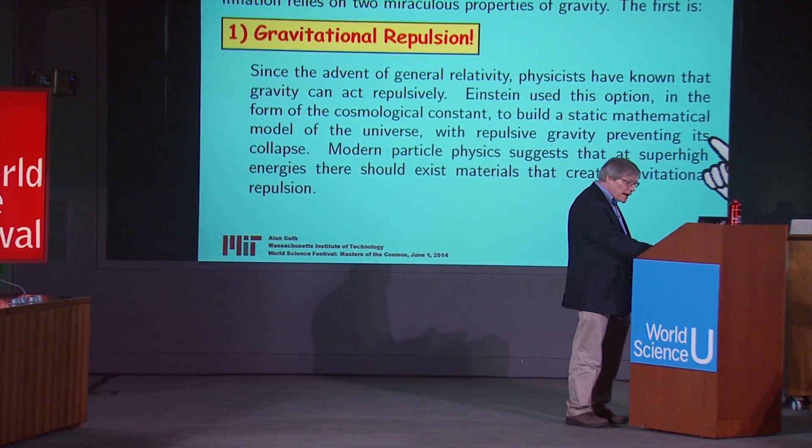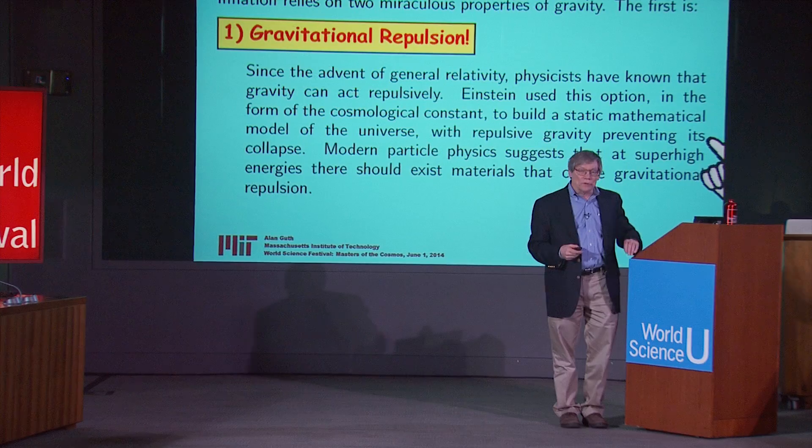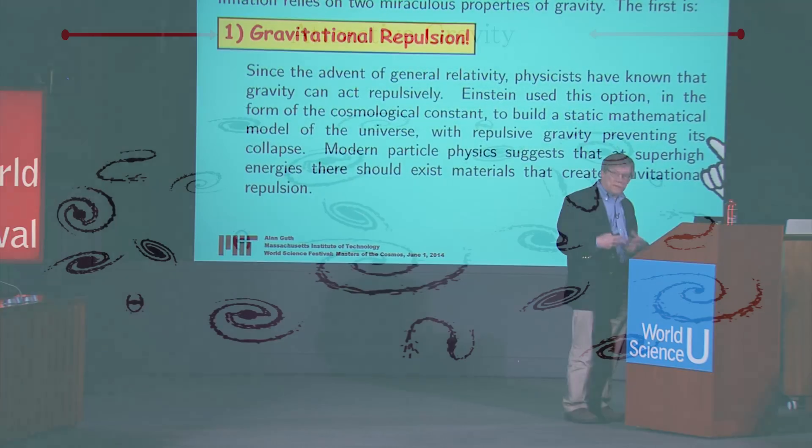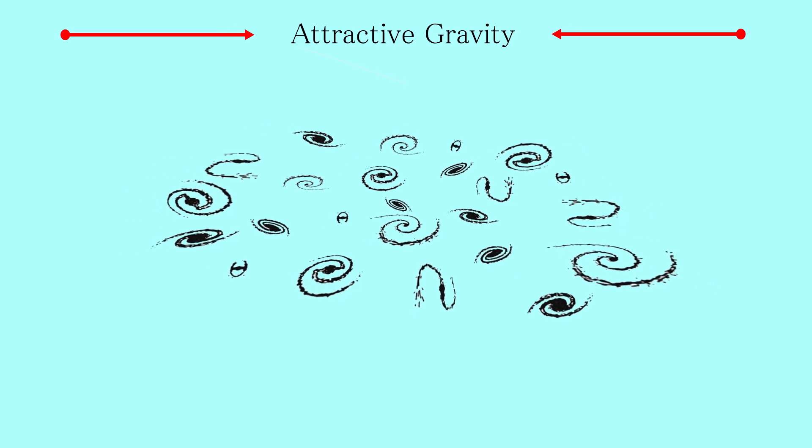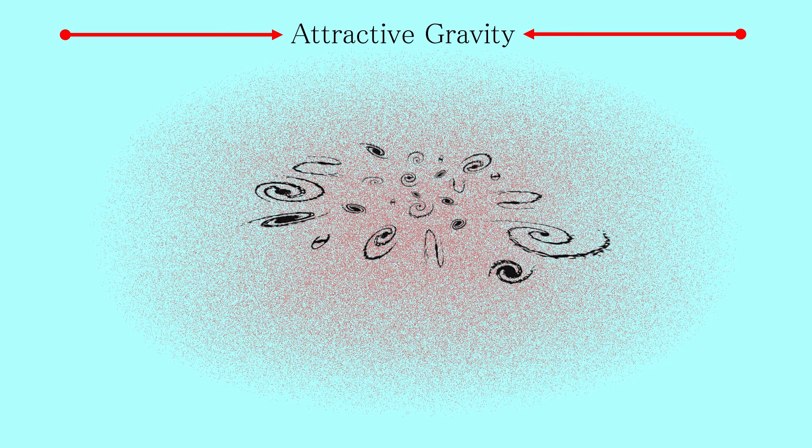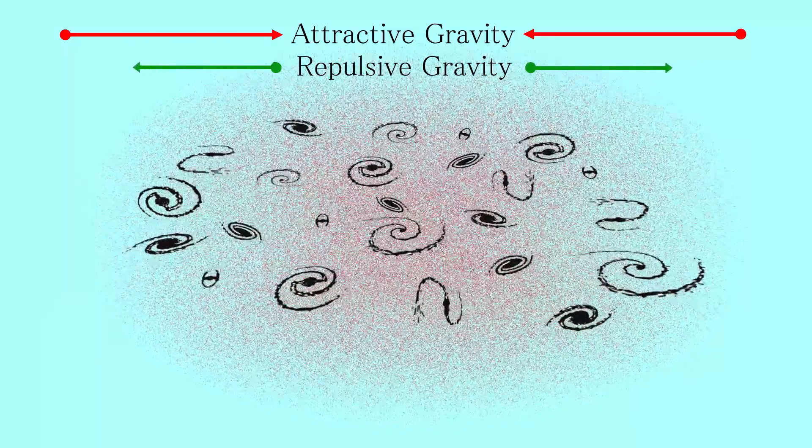Since the advent of general relativity, physicists have known that gravity can act repulsively. Einstein used this option very early on in 1917 when he built his own model of cosmology. He introduced the concept of a cosmological constant, which is basically a method of invoking this repulsive form of gravity, because he was trying to build a static model of the universe — a mechanism to oppose normal gravity and prevent the universe from collapsing. Modern particle physics also suggests that at very high energies, there should exist states of matter that do the same thing as the cosmological constant, causing repulsive gravity.